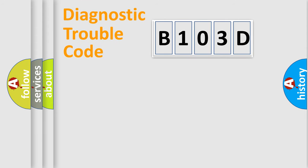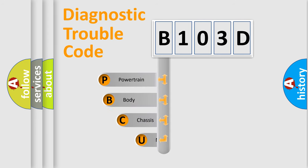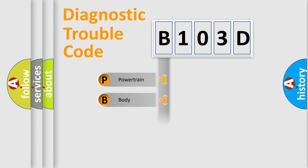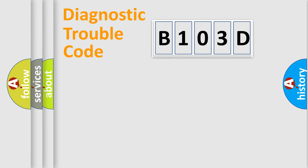First, let's look at the history of diagnostic fault code composition according to the OBD2 protocol, which is unified for all automakers since 2000. We divide the electric system of an automobile into four basic units: Powertrain, Body, Chassis, and Network. This distribution is defined in the first character of the code.